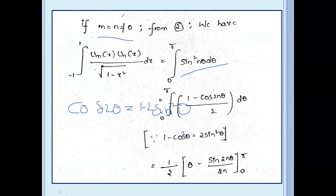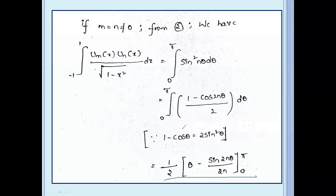Using 1 minus cos 2nθ equal to 2 sin² nθ, we write: integral from 0 to π of (1 minus cos 2nθ) by 2 dθ. Integrating: 1 by 2 into [θ minus sin(2nθ) by 2n], with limits 0 to π.